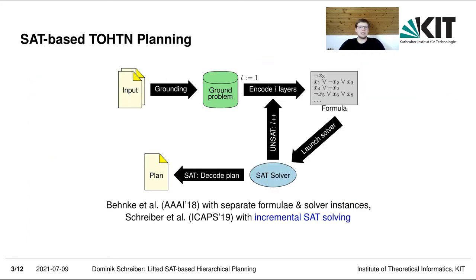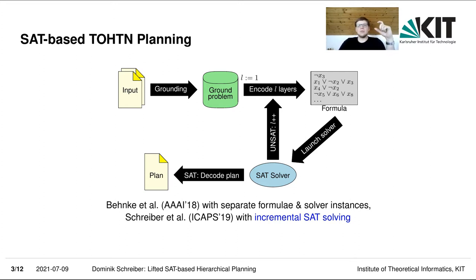TO-HTN planning can be done with propositional satisfiability as follows. Beginning from the input description, we ground the problem and obtain a database of ground operations which we can apply. Then we begin with just encoding a single layer of the problem, such as the operations resulting from the initial tasks. We receive a propositional formula and then launch a SAT solver on the formula.